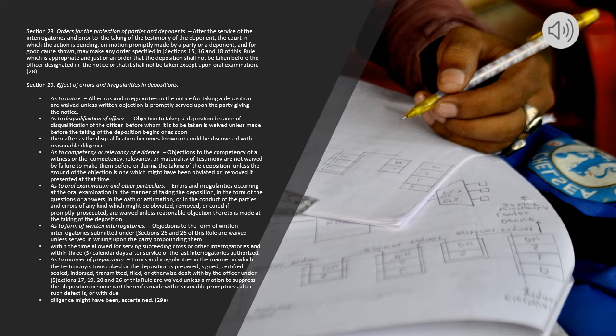As to Oral Examination and Other Particulars: Errors and irregularities occurring at the oral examination in the manner of taking the deposition, in the form of the questions or answers, in the oath or affirmation, or in the conduct of the parties and errors of any kind which might be obviated, removed, or cured if promptly prosecuted, are waived unless reasonable objection thereto is made at the taking of the deposition. As to Form of Written Interrogatories: Objections to the form of written interrogatories submitted under Sections 25 and 26 of this rule are waived unless served in writing upon the party propounding them, within the time allowed for serving succeeding cross or other interrogatories and within 3 calendar days after service of the last interrogatories authorized.